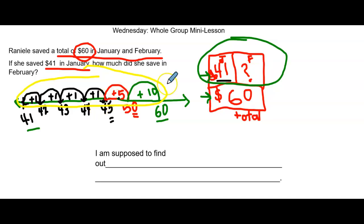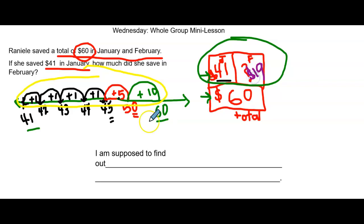Now, if I count the skip jumps at the top of my number line, I'll know how much money she saved in February. Can you help me? Just like money, we want to start with the largest amount first. So we have 10. 10 plus 5 is 15. Plus one more is 16, another one is 17, another one is 18, another one is 19. Boys and girls, she saved $19 in February. And if we check our answer, 41 plus 19 equals 60.